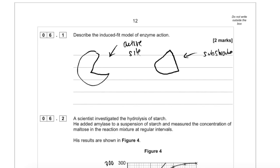Now, in the induced fit model of enzyme action, this substrate isn't actually completely complementary to the active site of the enzyme. However, it is able to bind to it, and when it binds, the shape of the active site actually changes shape. And that's when the enzyme-substrate complex forms.